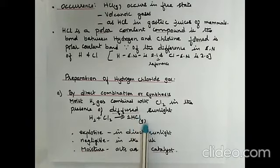The general method of preparation is by direct combination or synthesis. Moist hydrogen gas combines with chlorine in the presence of diffused sunlight to form hydrogen chloride gas. Two conditions are required: moist hydrogen gas and diffused sunlight. In direct sunlight the reaction can lead to an explosion. In the dark the reaction is negligible. Moisture acts as a catalyst in this reaction.